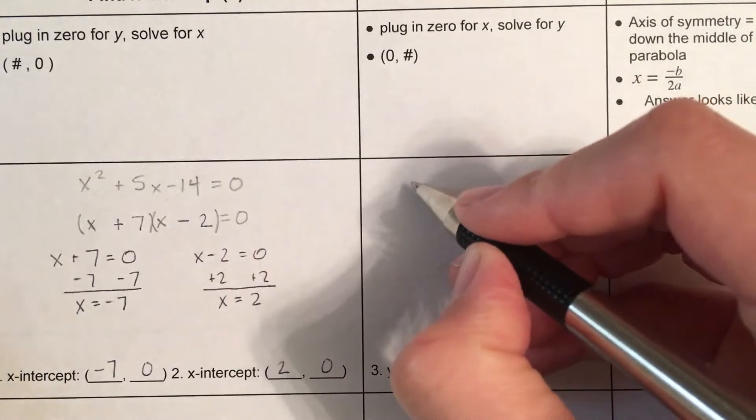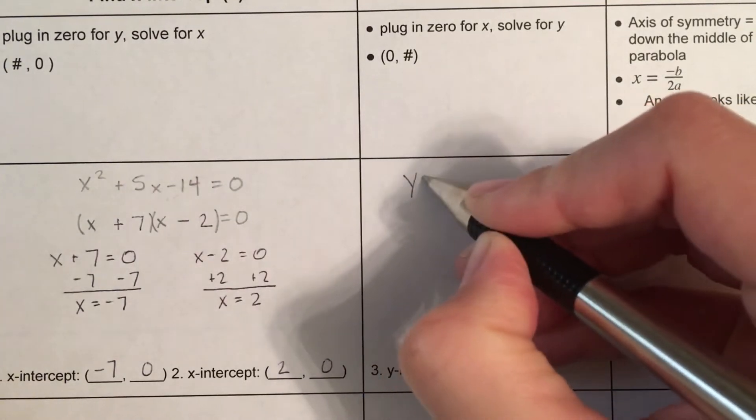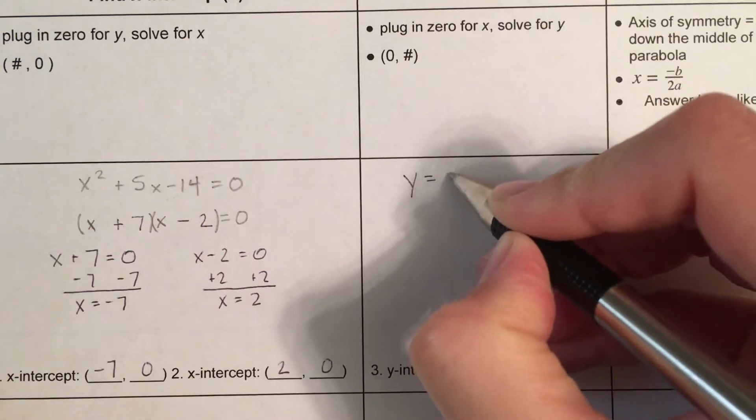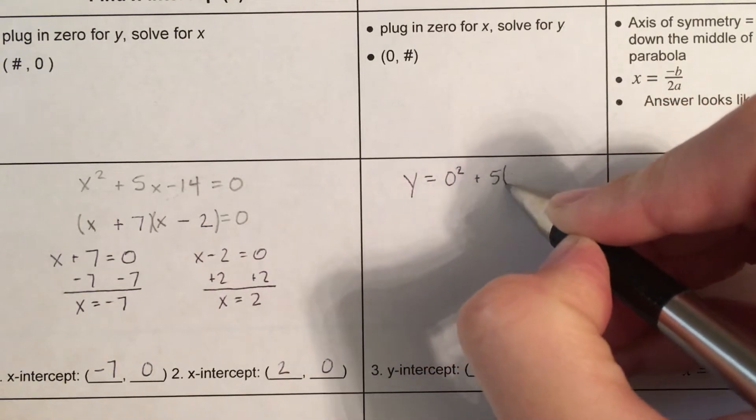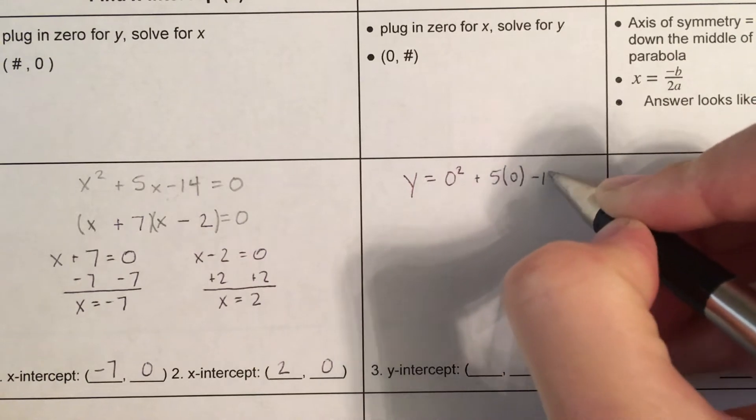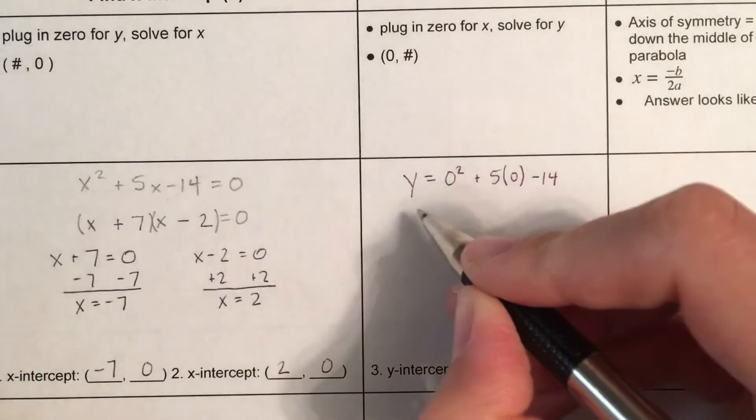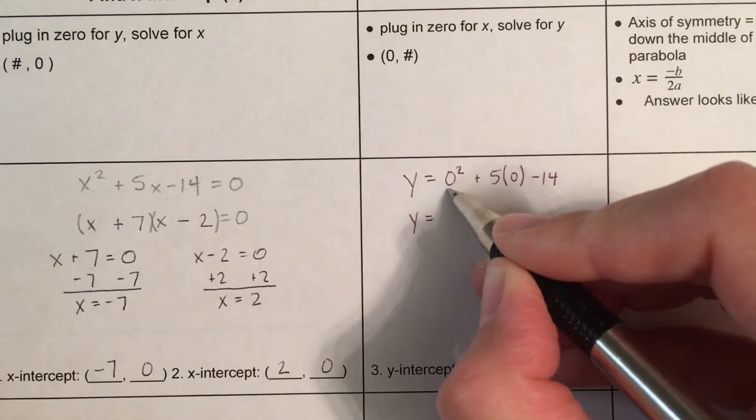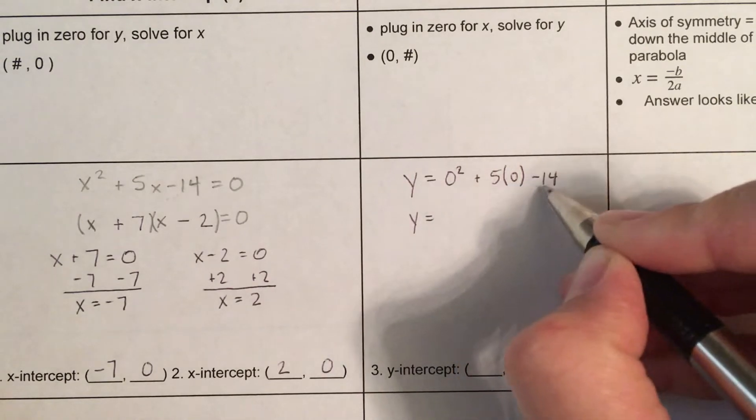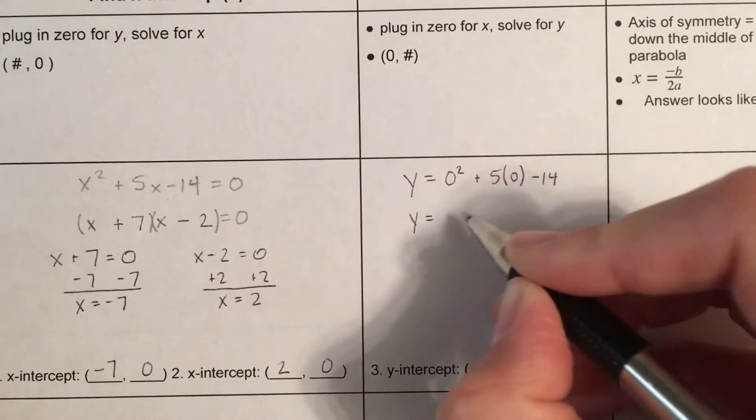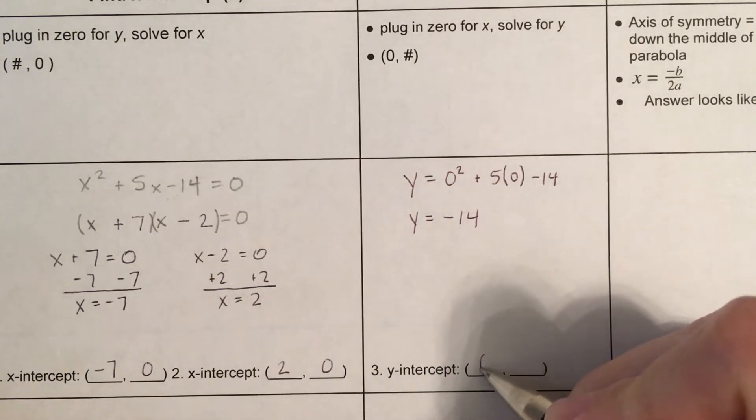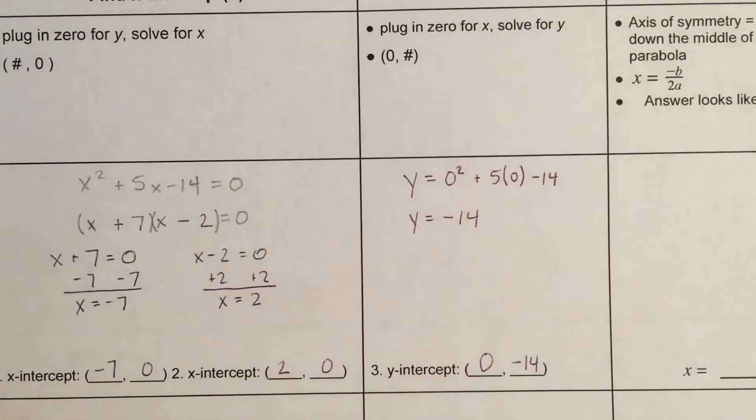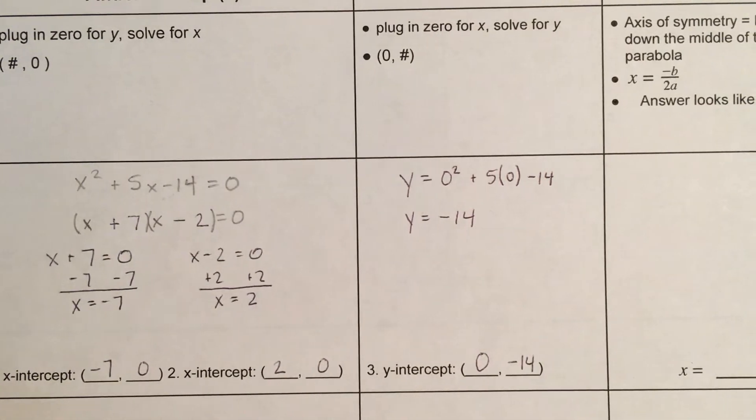Now, for the y-intercept, I'm plugging in 0 for x. So, I'm going to take my function, and wherever I see an x, I'm going to plug in a 0 instead. 0 squared is 0. 5 times 0 is 0. So, this is 0 plus 0 minus 14. So, the y-intercept is, I plugged in 0 for x, and I ended up with negative 14 for y.